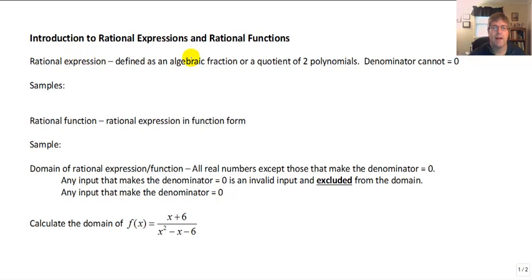It's defined as an algebraic fraction or a quotient of two polynomials. But as you'll see, sometimes we'll express this as two monomials. However, in a rational expression, the denominator cannot equal zero.